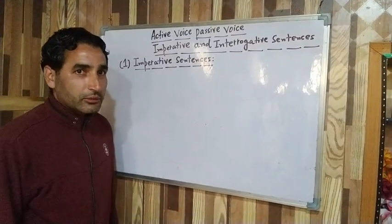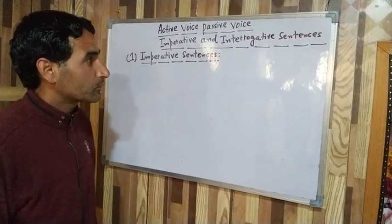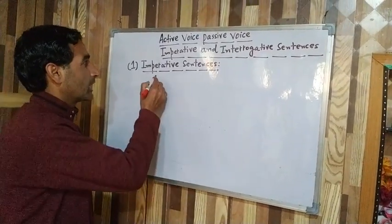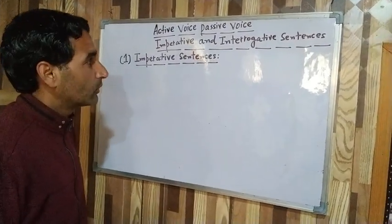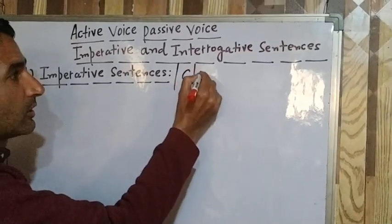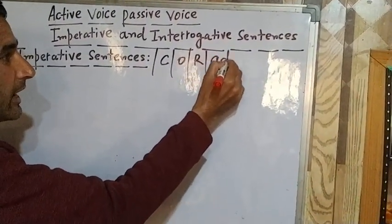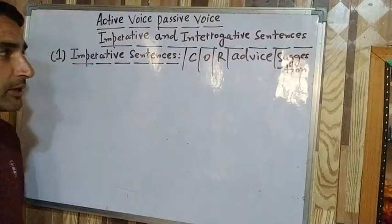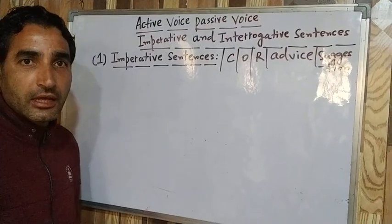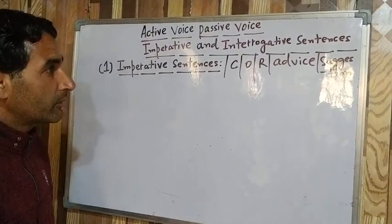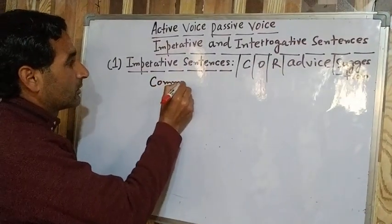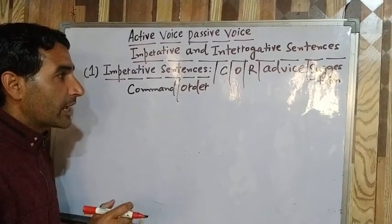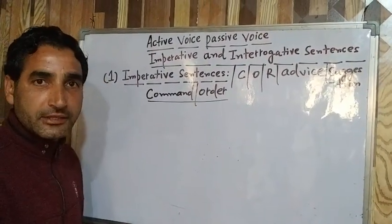Today let's learn how to change imperative and interrogative sentences from active voice to passive voice. Imperative sentences are sentences which express command, order, request, advice, or suggestion. First, let us take command or order — if there is any imperative sentence in active voice that expresses command or order, let us see how to change such sentences from active voice to passive voice.